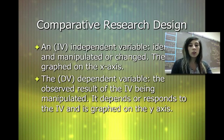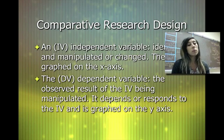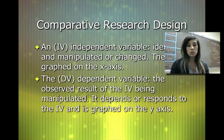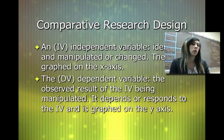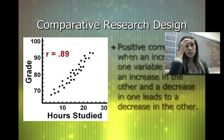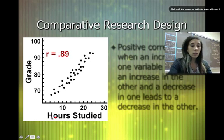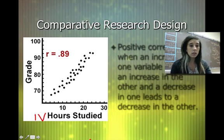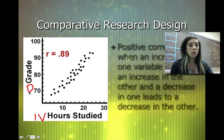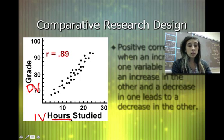The dependent variable is the one that is being observed as a result of the independent variable being manipulated. The dependent variable depends upon the independent variable, and we typically graph it on the y-axis. For example, hours studied is the independent variable on the x-axis — that is what you can manipulate. The grade is the dependent variable on the y-axis, because the grade is a result of the hours studied.